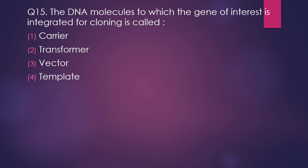Question 15. The DNA molecule to which the gene of interest is integrated for cloning is called: carrier, transformer, vector, or template. The correct answer is option 3 — vector.